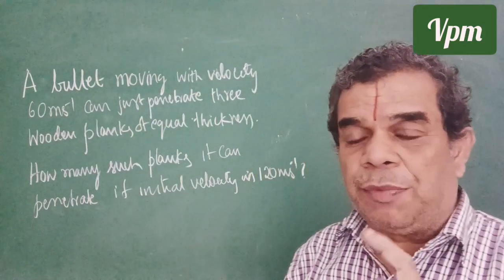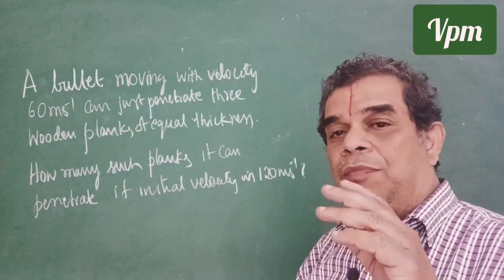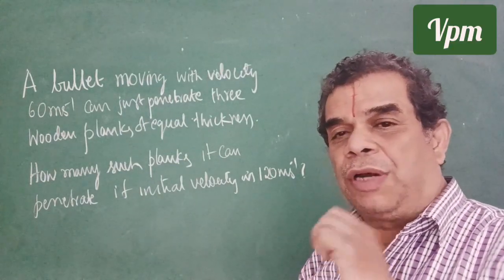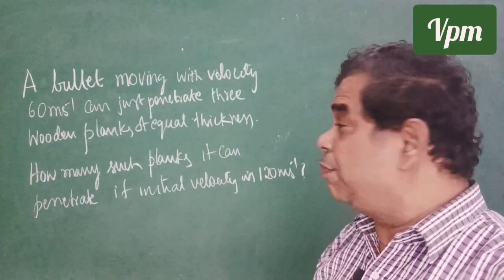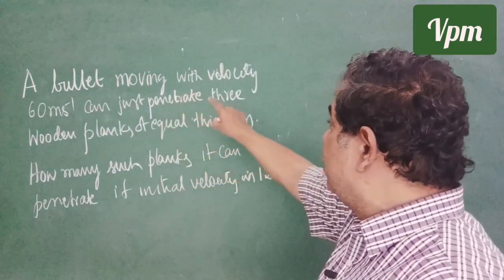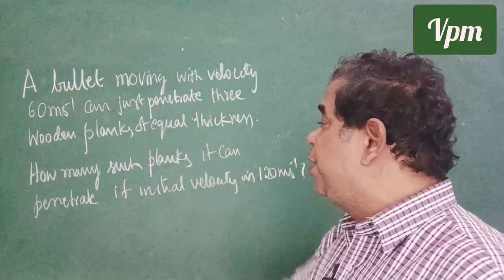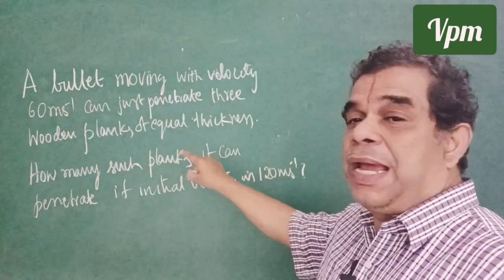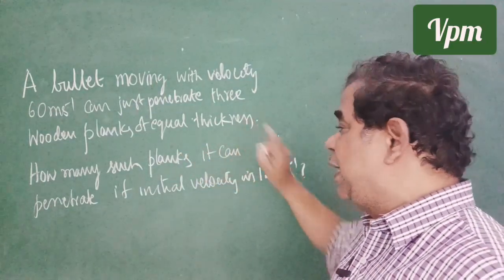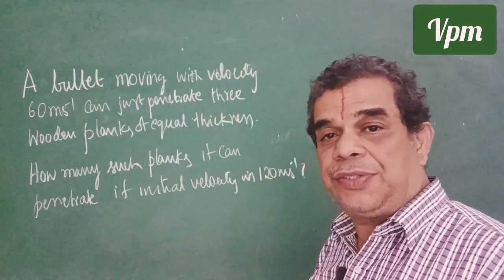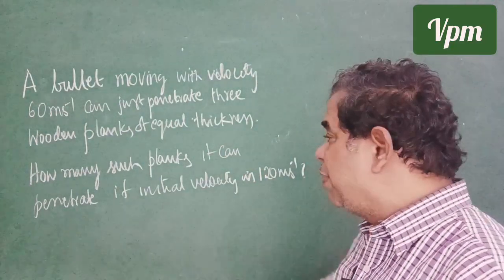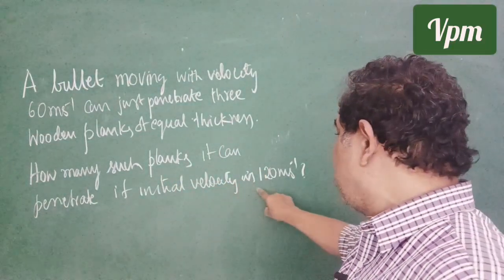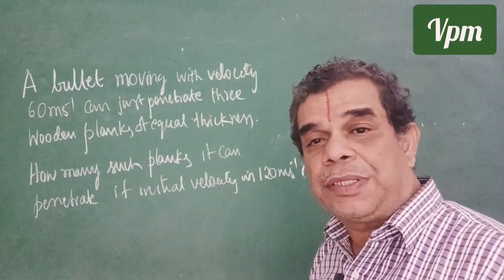In this video, I cover a problem of one-dimensional motion which is somewhat indirect. A bullet moving with velocity 60 meters per second can penetrate three wooden planks of equal thickness. How many such planks can it penetrate if the initial velocity is 120 meters per second?